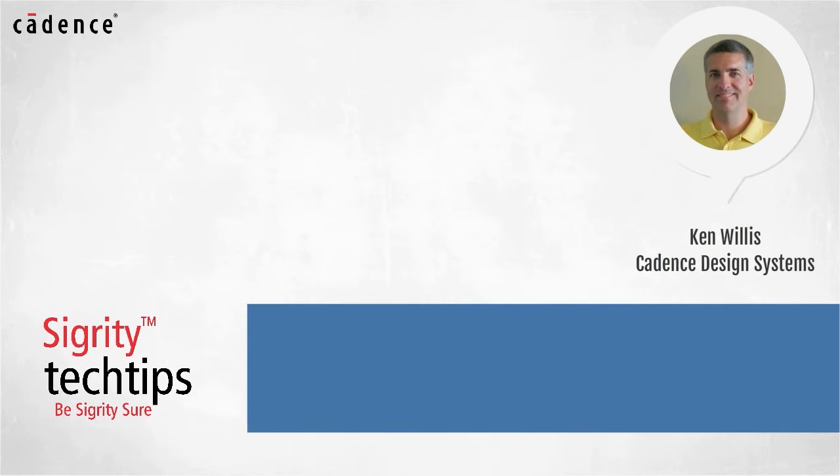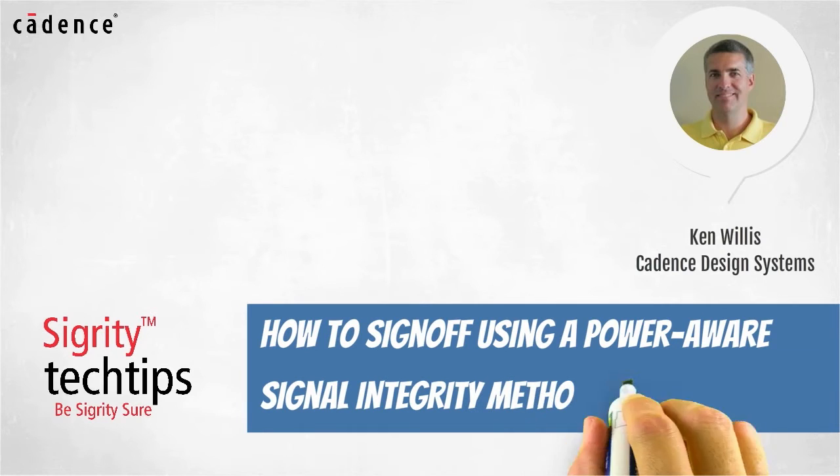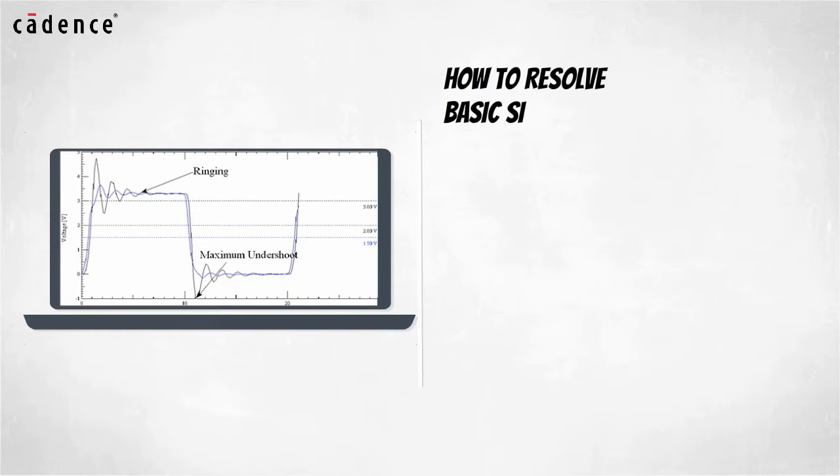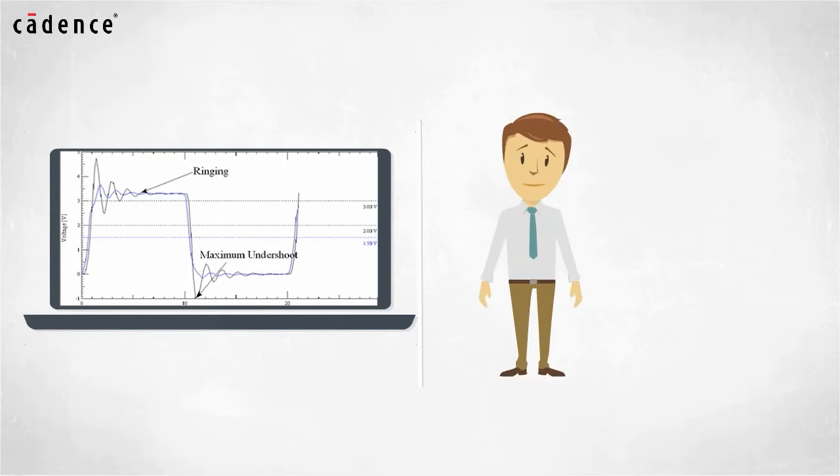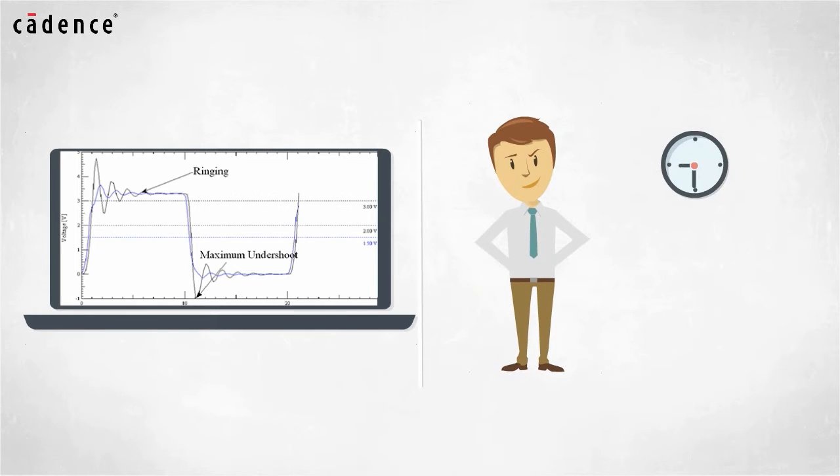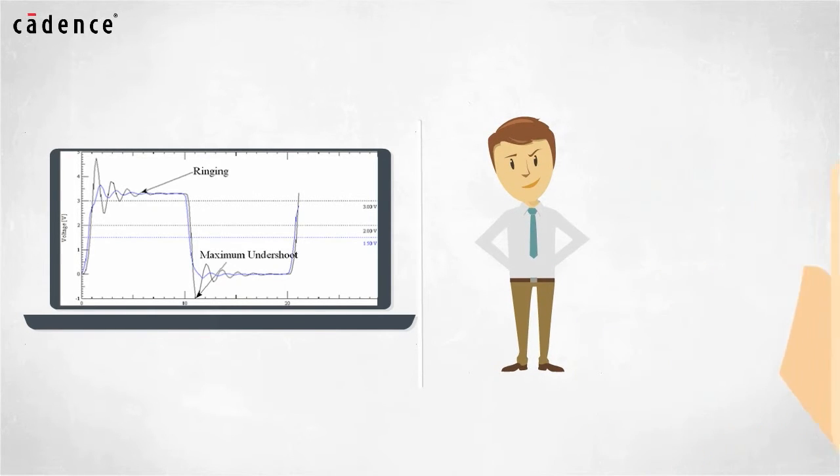Today we bring you another installment of how to sign off your designs using a power-aware signal integrity methodology. Our video today will show you how to resolve basic signal integrity concerns before your PCB is even routed. Using this methodology you can avoid wasting hours of rerouting a PCB late in the design cycle and having to re-verify signal integrity.